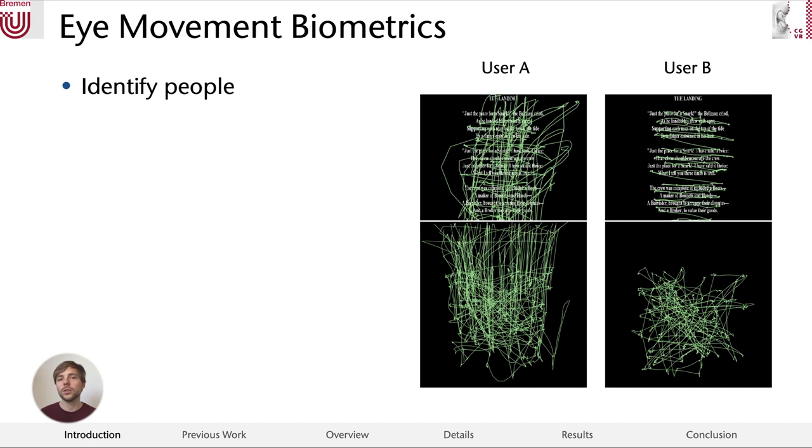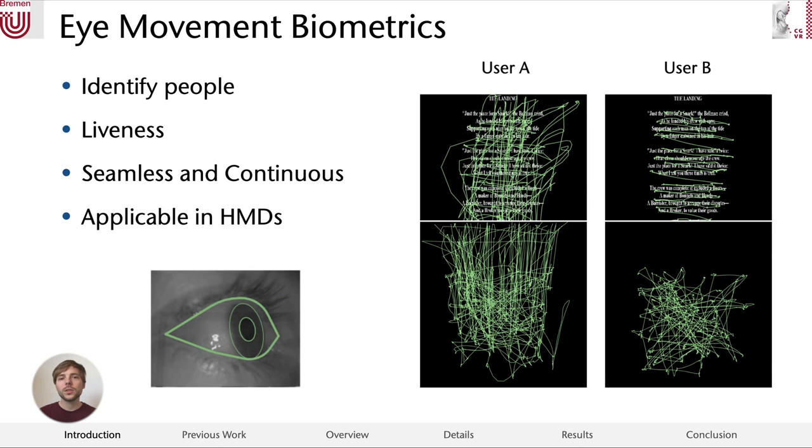Eye movement biometrics have some unique advantages. First, we have an automatic liveness check. Second, we can use it for seamless and continuous authentication in that the user isn't required to do a special authentication step but is continuously authenticated while he uses his normal software. And last, we can use it in HMDs. Actually there are already consumer-grade HMDs where eye tracking is integrated, for example for foveated rendering.